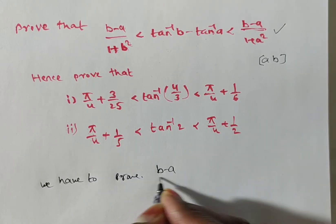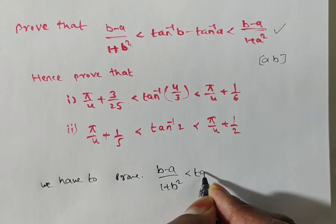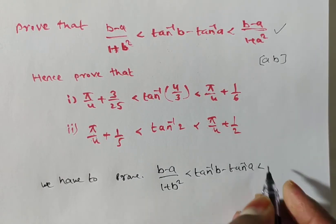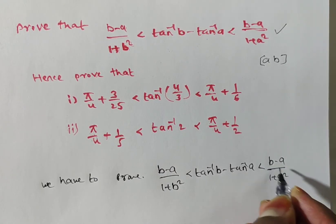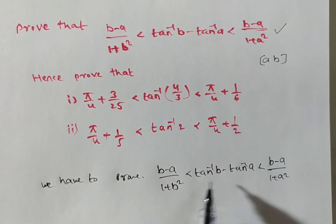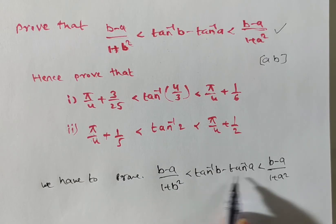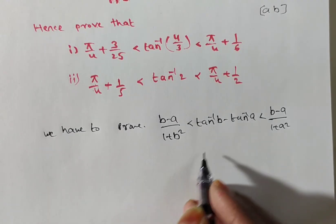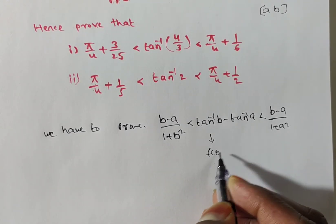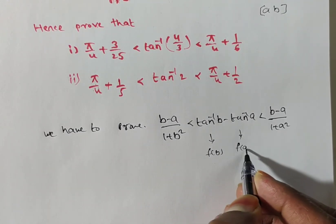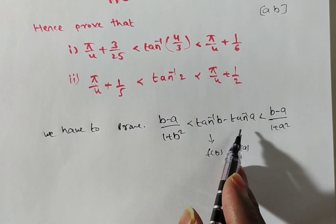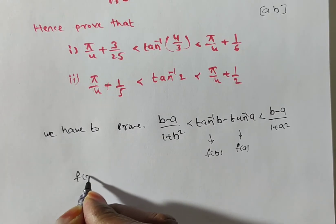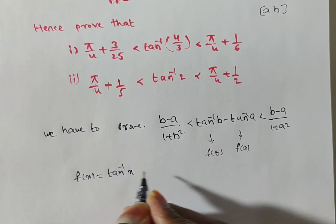We have to prove: (b minus a) by (1 plus b square) is less than tan inverse b minus tan inverse a, which is less than (b minus a) by (1 plus a square). You observe there is an inequality of the form f(b) minus f(a). So f(b) is tan inverse b, f(a) is tan inverse a, meaning f(x) equals tan inverse x.